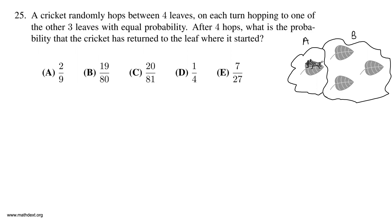After each hop, what is the probability that the cricket is in state A? I'm going to express it recursively. After two hops, I'll express it in terms of the probability after one hop. After three hops, I'll use the numbers from the probability after two hops to calculate the next one. And once I have the probability after three hops, I'll use that to calculate the probability the cricket is in state A after four hops.